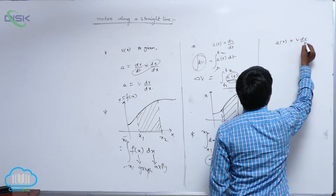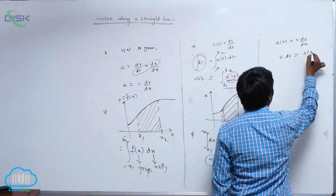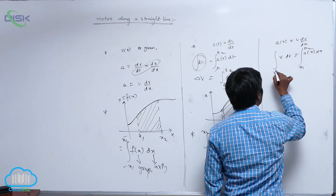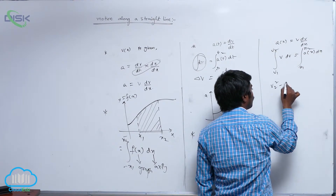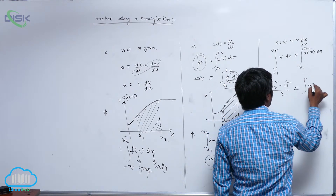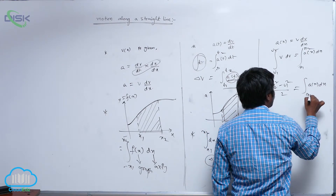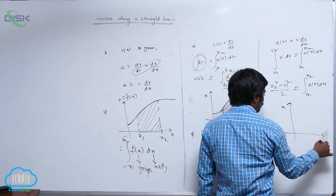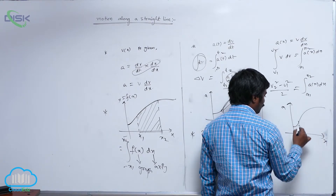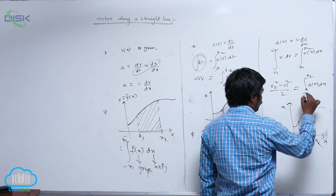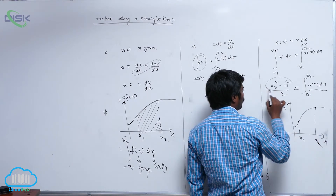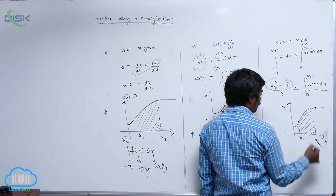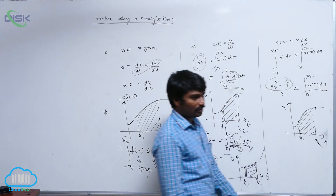Next, a is a function of x, so vdv by dx gives: vdv equals a of x dx. Integrating from x1 to x2 and v1 to v2, you get v2 squared minus v1 squared divided by 2, equal to the integral of a of x dx from x1 to x2. So if an a-x graph is given with any arbitrary shape from x1 to x2, doing this integration gives v2 squared minus v1 squared by 2, which equals the area of the shaded region between limits x1 and x2.